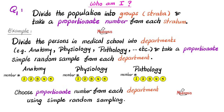Here are the members of the anatomy department, the physiology department, and the pathology department. In the anatomy department, we give each member a number — member one through five — and do the same for each other department. Then you choose a proportionate number from each department, for example four out of five, using simple random sampling.